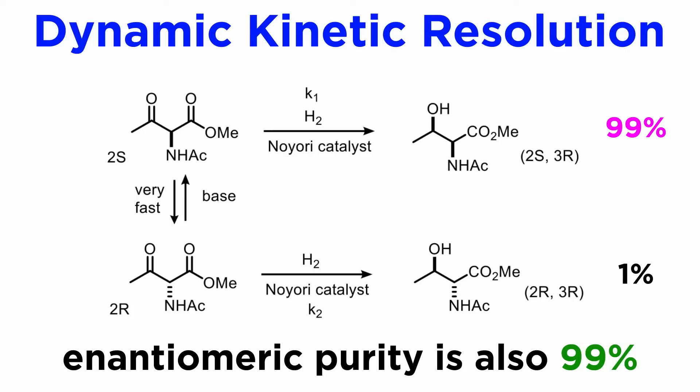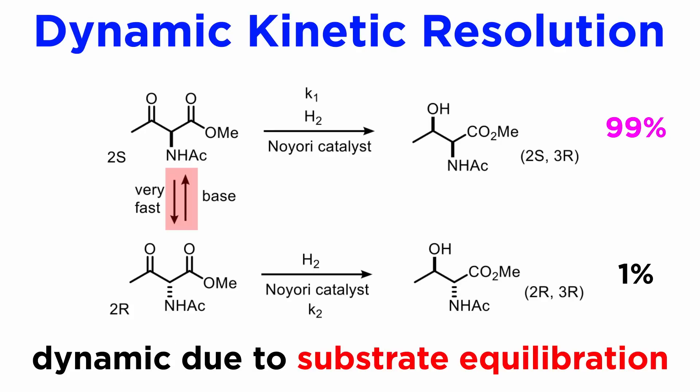This is what is called dynamic kinetic resolution, which hinges on the ability to equilibrate the two enantiomers of the substrate very quickly by any chemical means one can design — not necessarily using a base. Examples of this powerful strategy in synthesis are numerous.